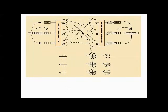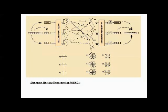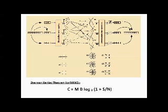In a MIMO system, data to be transmitted is divided into different independent data streams. The number of data streams M is always less than or equal to the number of antennas present. In the case of an asymmetrical antenna constellation, it is always less than or equal to the minimum number of antennas present. For example, a system having three transmitter antennas and two receiver antennas can only transmit two or fewer data streams. The capacity of antennas can be defined using the Shannon-Hartley theorem as C = M × B × log₂(1 + S/N).